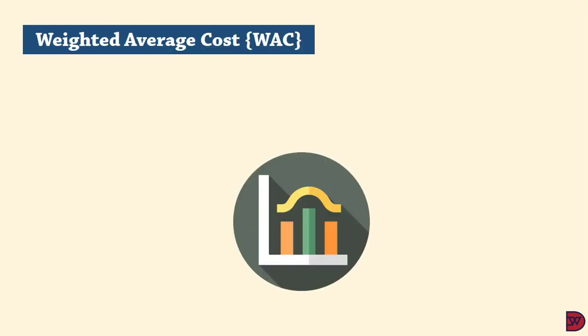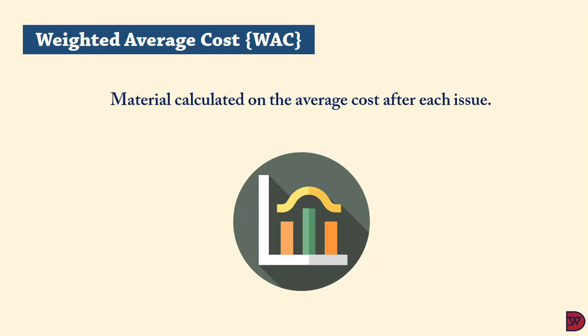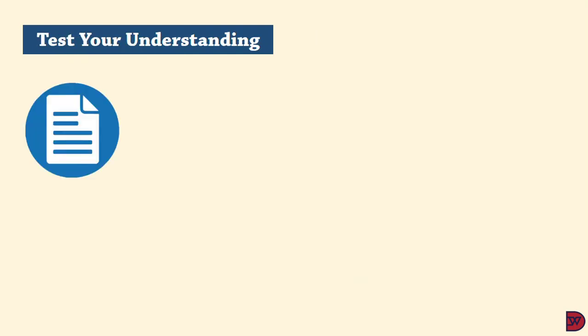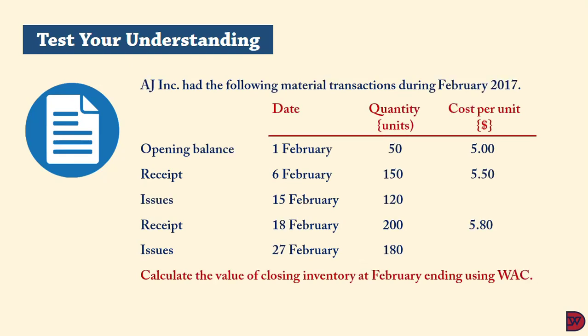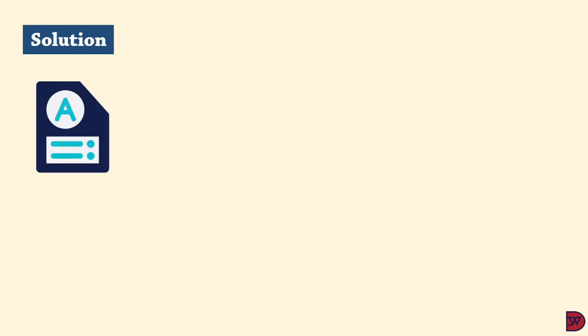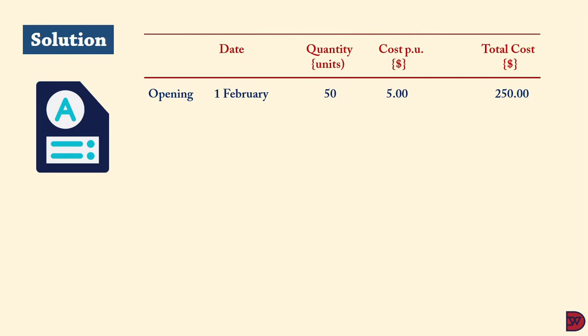The last method is the Weighted Average Cost. The average of the various costs of inventories is calculated and used. This method recalculates the average cost after each receipt of material. Using the same AJ Incorporated scenario: opening 50 units at $5.00 = $250; receipt on 6 February of 150 units at $5.50 = $825.